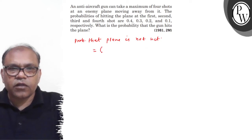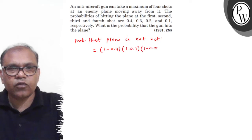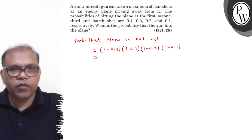First shot is missed with probability 1 minus 0.4, second shot with probability 1 minus 0.3, third shot with probability 1 minus 0.2, and fourth shot with probability 1 minus 0.1.